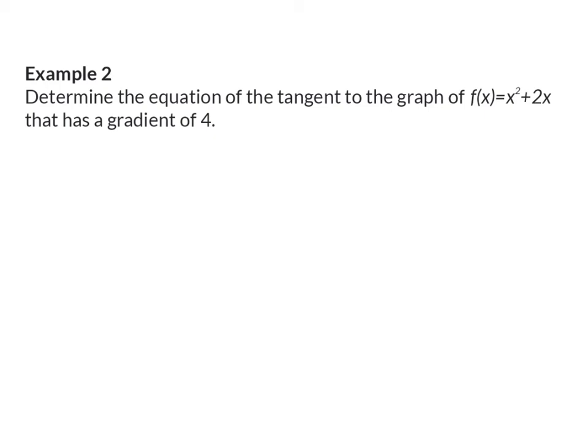Example 2: Determine the equation of the tangent to the graph of f that has a gradient of 4. So this time the x value of the point of contact is not given, but the gradient is given. The first of our three steps here will be that we already know that the gradient is 4. We need to determine both the x and y values of our point of contact, as well as the y-intercept. To calculate the coordinates of our point of contact, we will make use of the fact that we already know the gradient is 4.